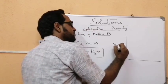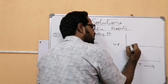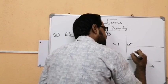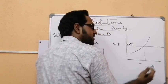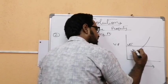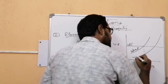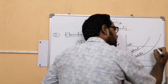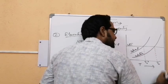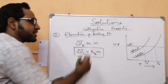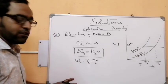From the graph — vapor pressure on one axis and temperature on the other — we draw the atmospheric pressure line at 1 atm. The vapor pressure curve of the pure liquid meets 1 atm at Tb°, the boiling point of the pure solvent. When a non-volatile solute is added, the vapor pressure decreases, so the solution curve meets 1 atm at a higher temperature Tb, the boiling point of the solution. Thus ΔTb = Tb − Tb° is the elevation in boiling point.